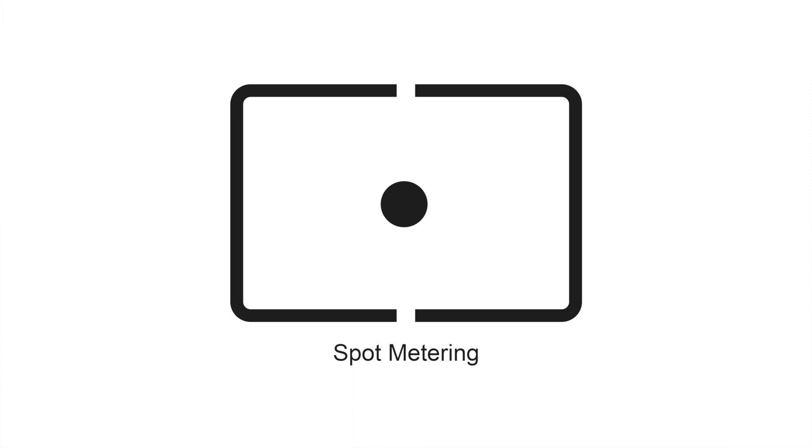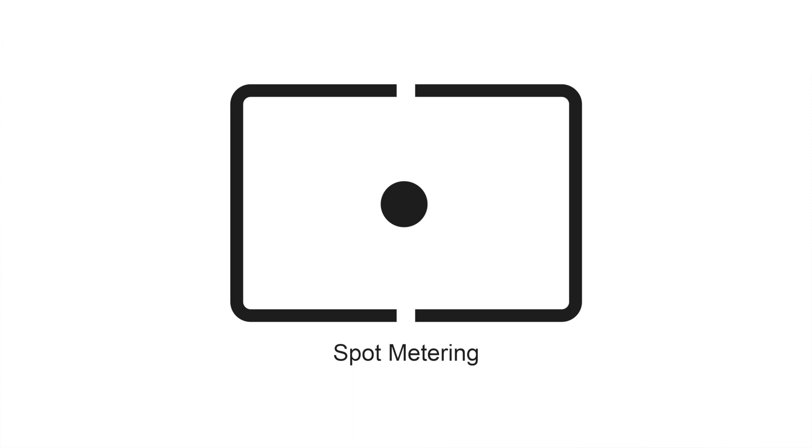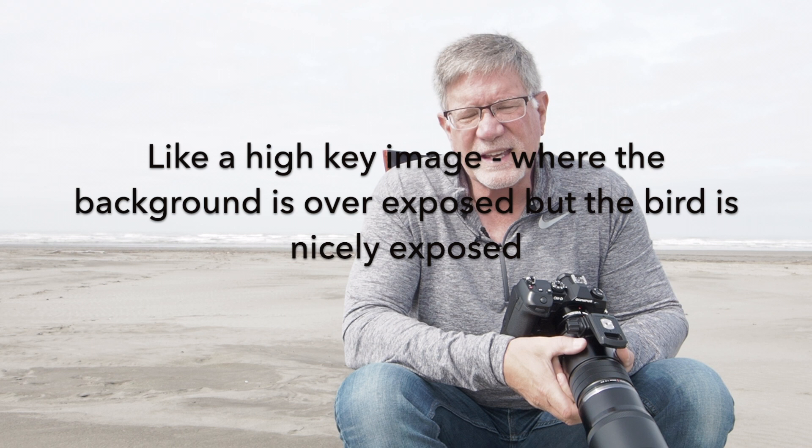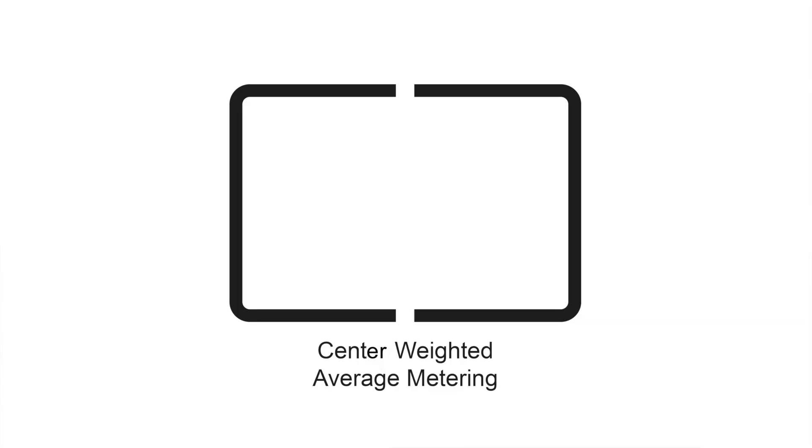Spot metering and partial metering both measure specific areas in the frame, usually right where the focus point is. Spot metering measures between two and five percent of the frame, while partial metering measures between eight and fifteen percent, but they work pretty much the same. They take a specific sample and set your exposure off of that. That's really handy if you've got a dark bird on a white background. Another good case is a backlit bird where you want the bird to be properly exposed — spot metering right on the bird will discard all the brighter ambient light surrounding it.